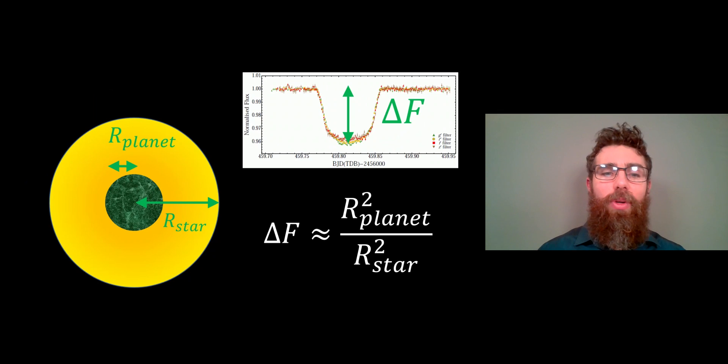It's fairly straightforward. We have the radius of the star and the radius of the planet, and it's basically just the area of those subtracted. Whatever you're left over with is how we could basically get the radius of the exoplanet.